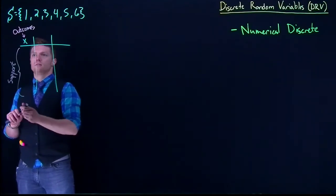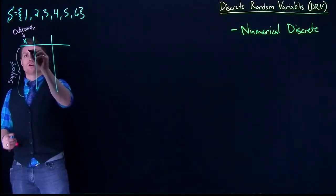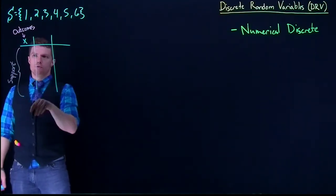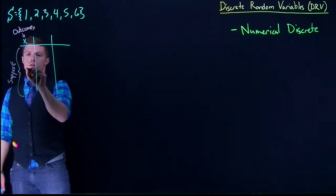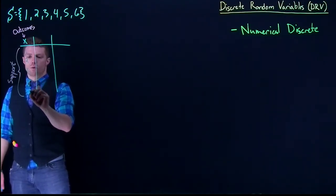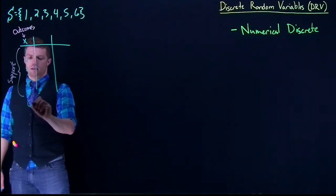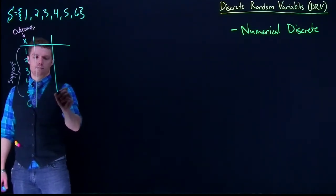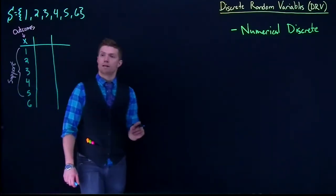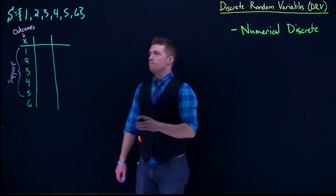All possible outcomes of this specific random event would be the following. Instead of writing it like this, I'm just going to start with the smallest at the top and move my way down. So I've got 1, 2, 3, 4, 5, and 6. That's all of my possible outcomes.